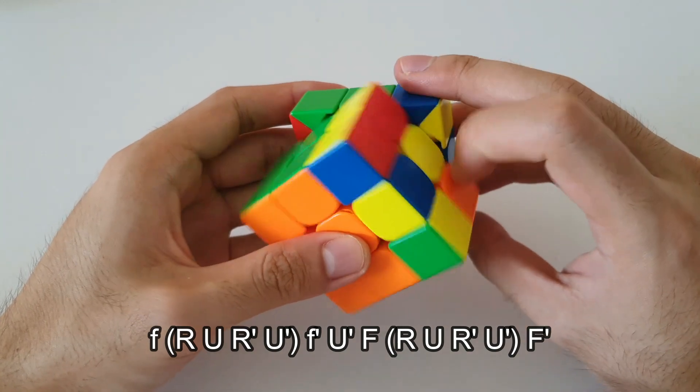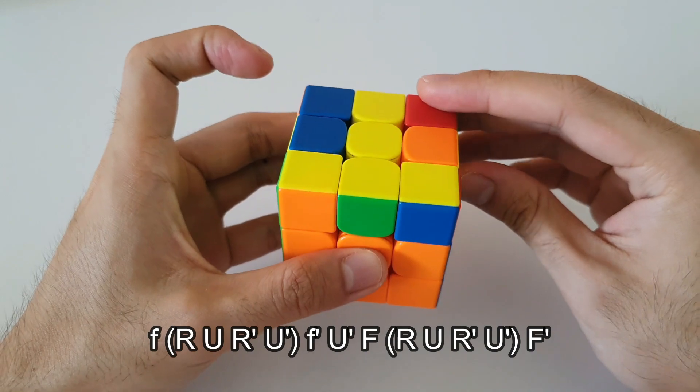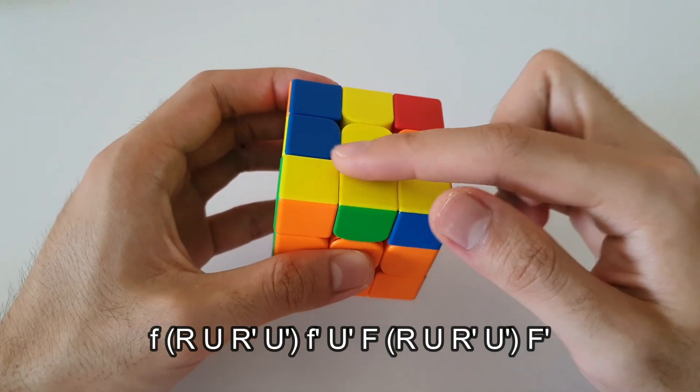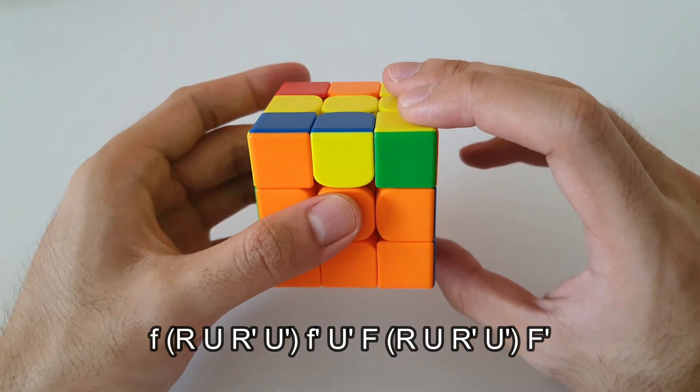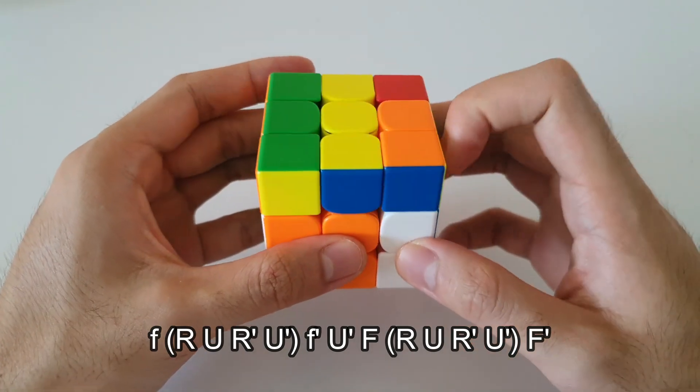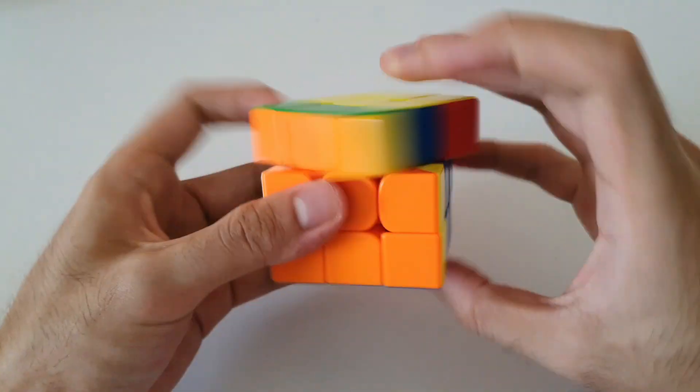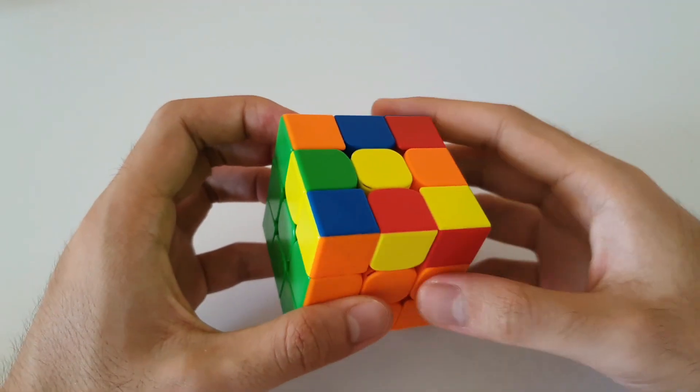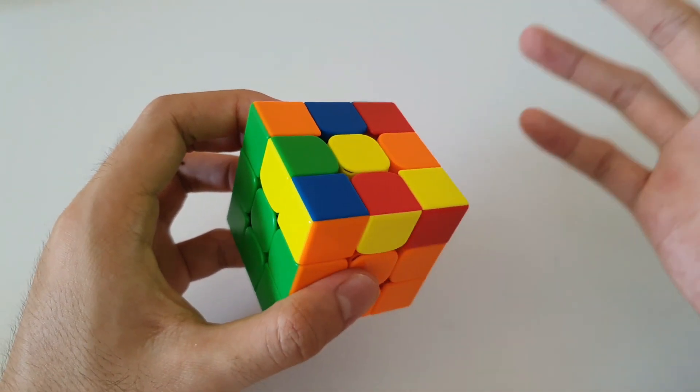Starts off with a wide F move, sexy, wide F'. That gets you this T-shape OLL case which I'm sure all of you should know how to solve by now. This is just F sexy F'.